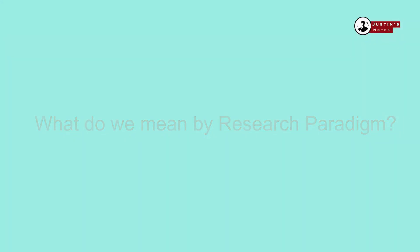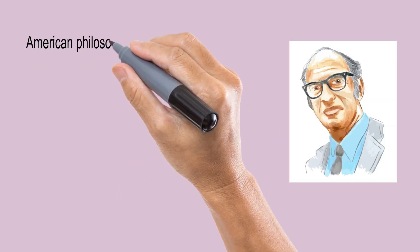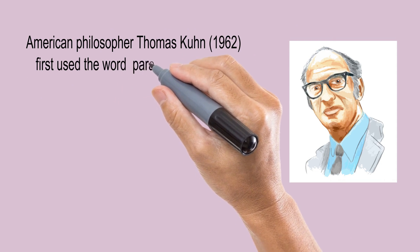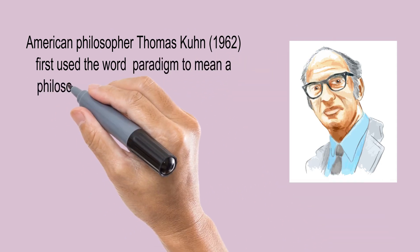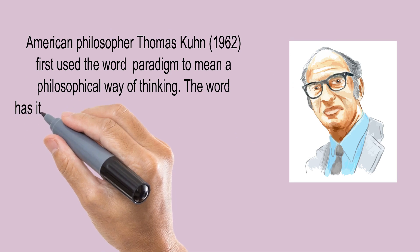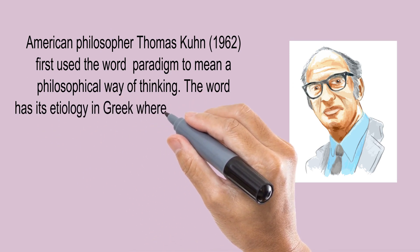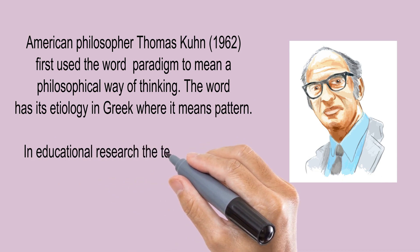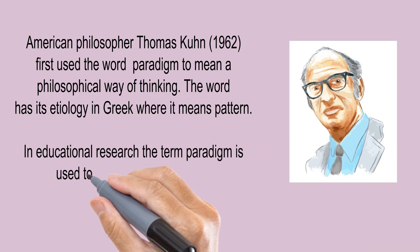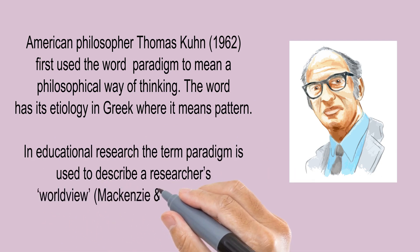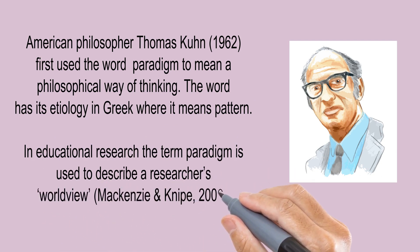What do we mean by a research paradigm? American philosopher Thomas Kuhn in 1962 first used the word paradigm to mean a philosophical way of thinking. The word has its etymology in Greek where it means pattern. In educational research, the term paradigm is used to describe a researcher's worldview, as defined by Mackenzie and Knife in 2006.